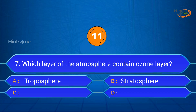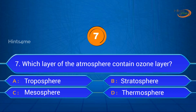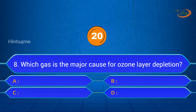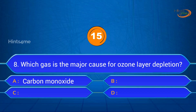Question 7: Which layer of the atmosphere contains the ozone layer? A. Troposphere, B. Stratosphere, C. Mesosphere, D. Thermosphere. Answer: Stratosphere.